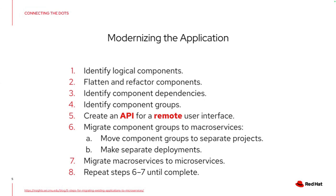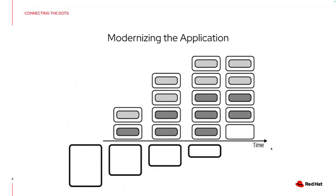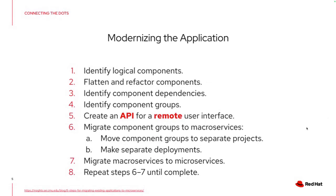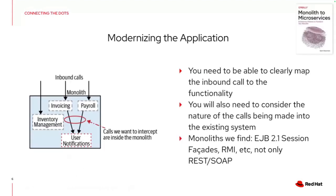People sometimes just say, 'Oh yes, APIs — that's going to be remote, I'm using gRPC, I'm using HTTP, and that's enough.' Then you go on to step six: migrate the component groups to microservices, move component groups to separate projects, make separate deployments. Then those microservices get carved out again and again, repeating steps six and seven until complete.